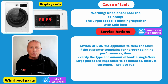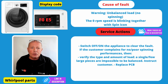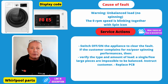F0E5 Error Code. This can be caused by an imbalance load. You may have problems with the spinning on the machine. Sometimes you may have a large amount of clothing building up on one side of the drum, like towels or large items, and this can cause an imbalance load.